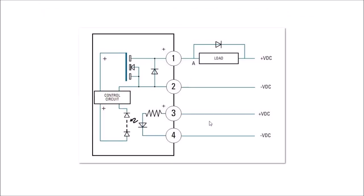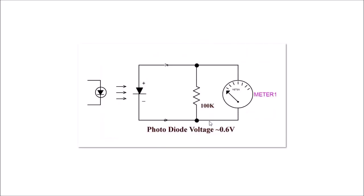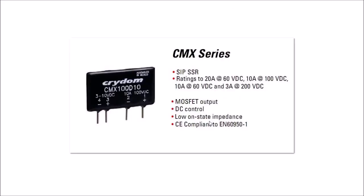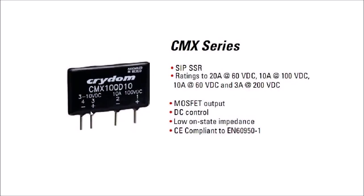This is the Crydom internal schematic. Again this is a PC board mount. 3 to 10 volts DC in, 10 amps at 100 volts DC out. This does have thermal epoxy on it but it really doesn't have anything to connect to heatsink. So if you're pulling 10 amps through this thing it's probably going to get warm.